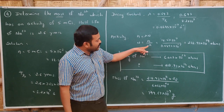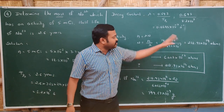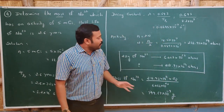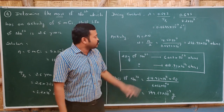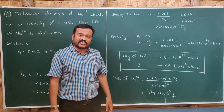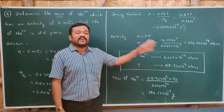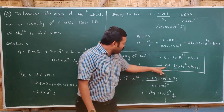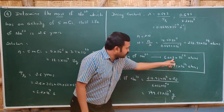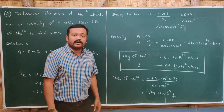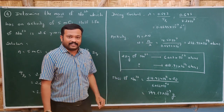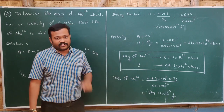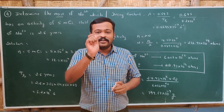Number of nuclei N = A divided by λ = 218.93 × 10¹⁴ atoms. Using Avogadro's concept: 22 grams of Sodium-22 contains 6.023 × 10²³ atoms. Mass = (218.93 × 10¹⁴ × 22) divided by (6.023 × 10²³) = 799.67 × 10⁻⁹ grams. These are all the types of problems which can be asked on the chapter Nuclei. Thank you.